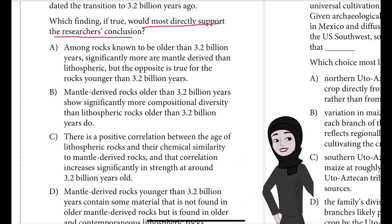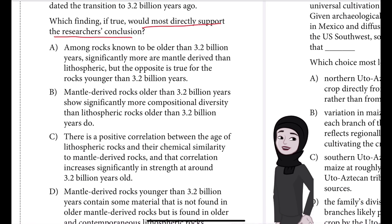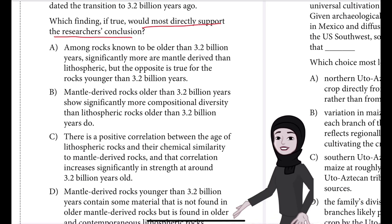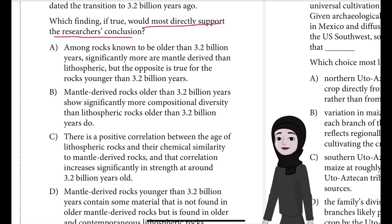Answer choice A: Among rocks known to be older than 3.2 billion years, significantly more are mantle-derived than lithospheric. But the opposite is true for rocks younger than 3.2 billion years.